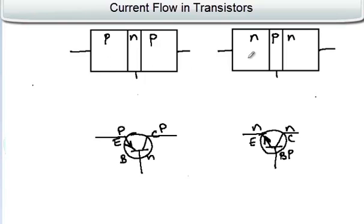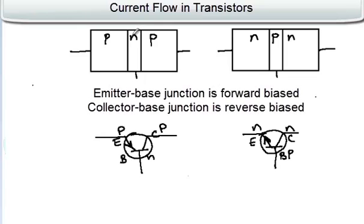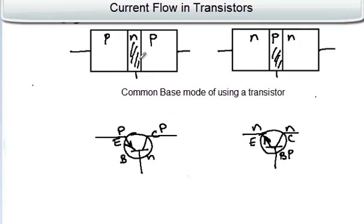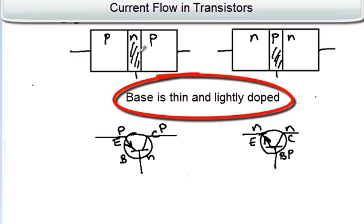Now let's take a look at the current flow in these transistors. Batteries are connected so that the emitter-base junction is forward biased and the base-collector junction is reverse biased. The base region is common to both the input and output circuits — this is called the common base configuration. The base is shown as a thin region, and apart from being thin, it is also very lightly doped.